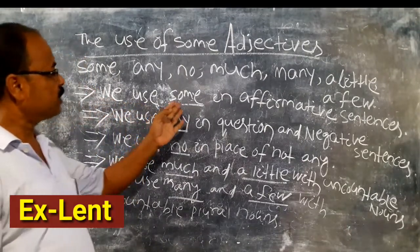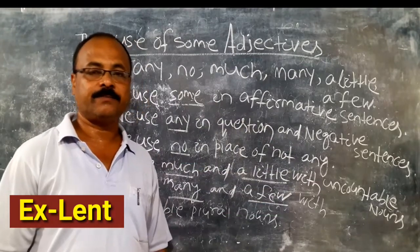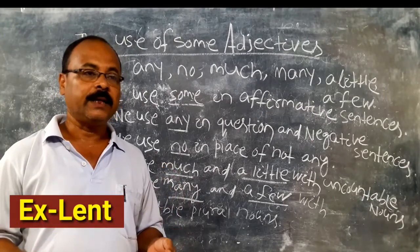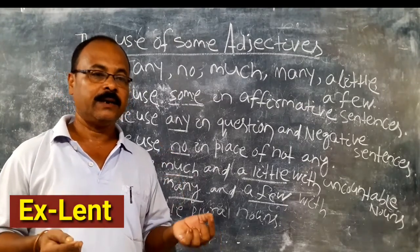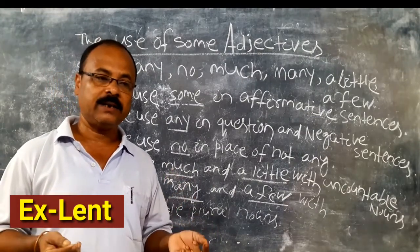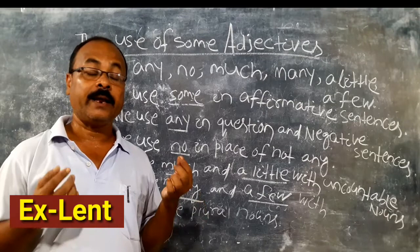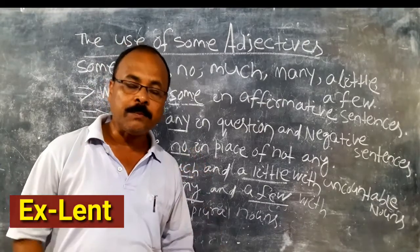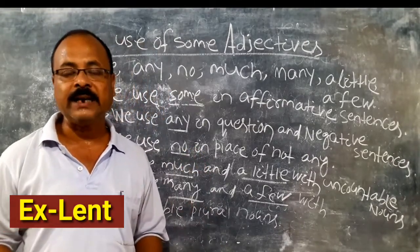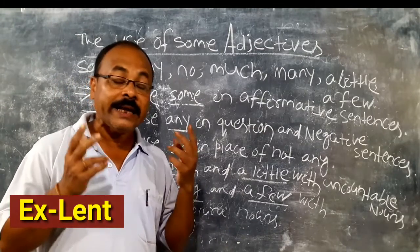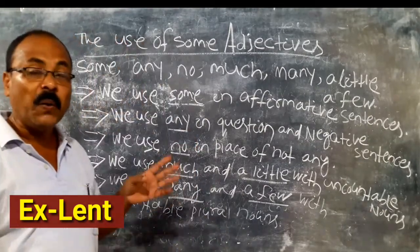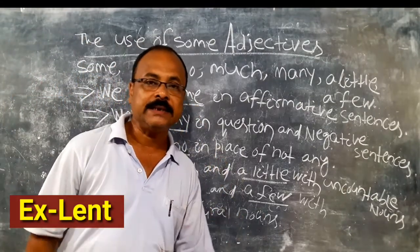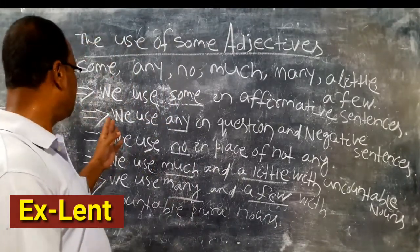We use 'some' in affirmative sentences. An affirmative sentence has a subject, a verb, and an object — it is a simple sentence. In these affirmative sentences, we use 'some.' We use 'any' in question and negative sentences.